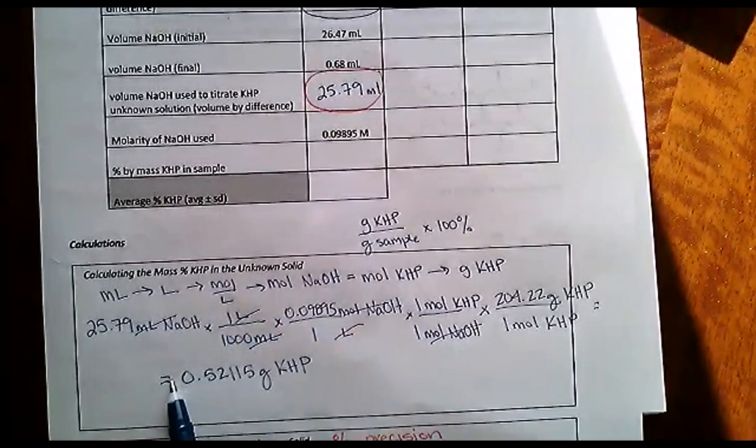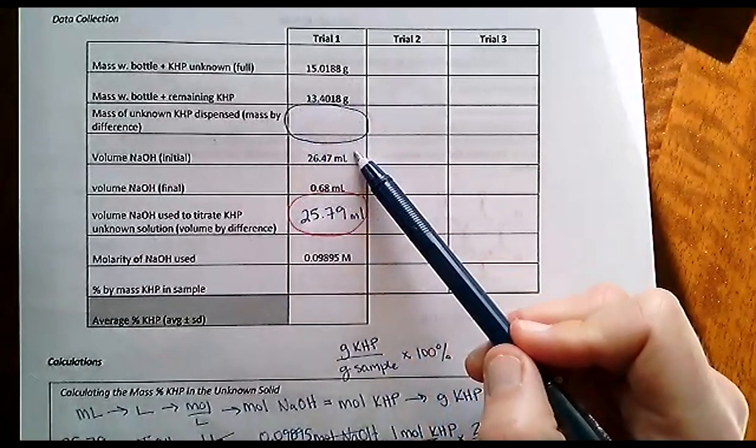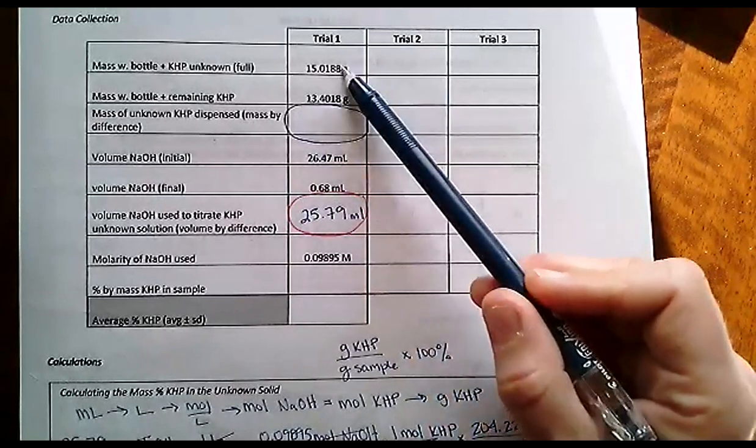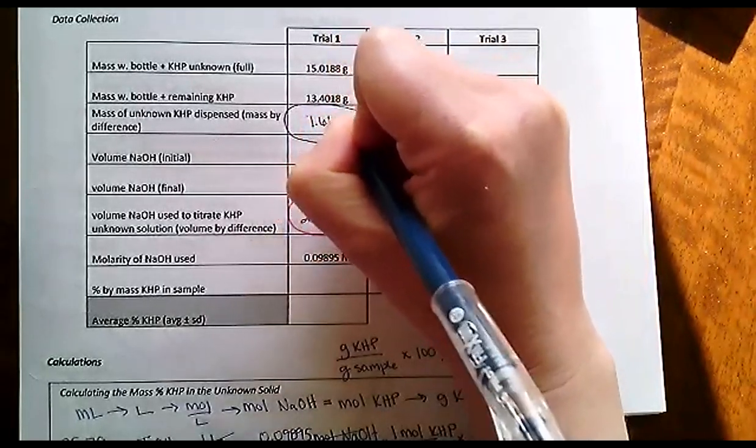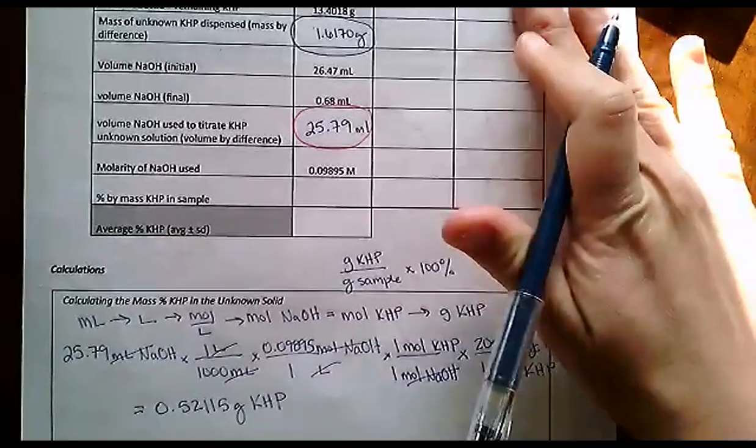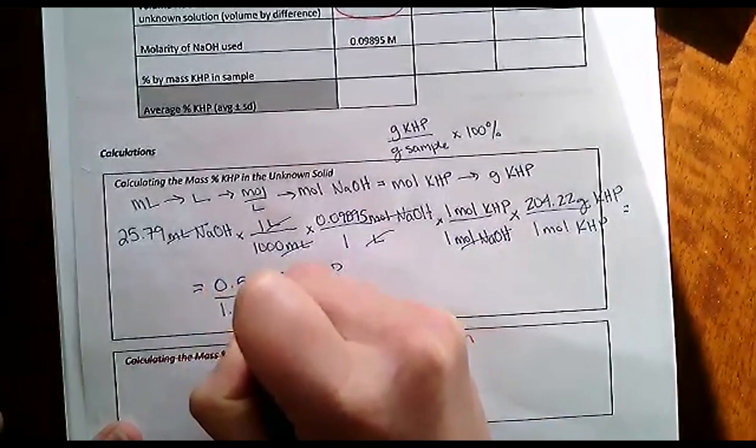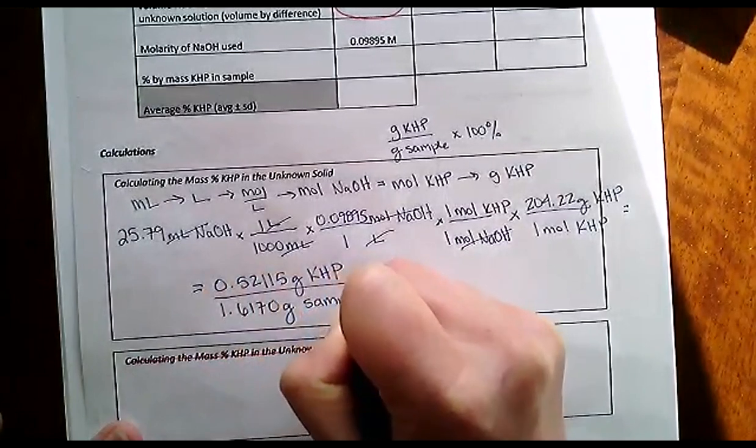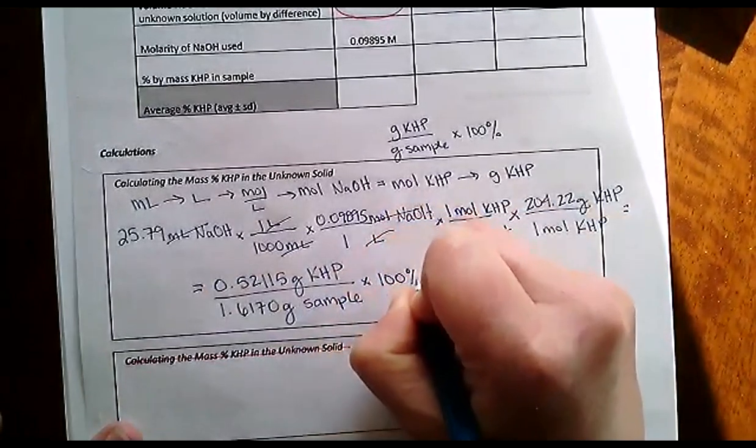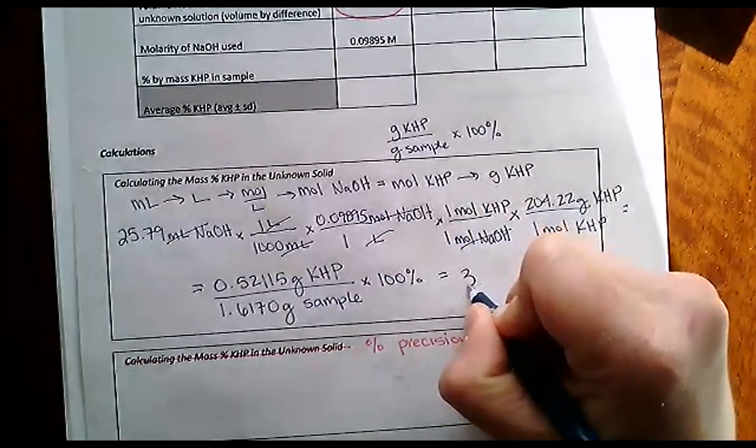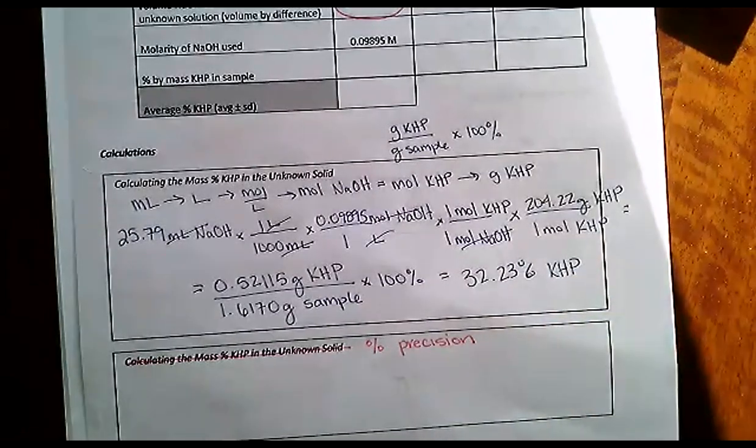My last question is, what percent of the total mass is that? The total mass of the sample by subtracting these two is 1.6170 grams of sample. We're going to divide now - take 0.52115 grams of KHP divided by 1.6170 grams of sample. That gives me the fraction of mass that comes from KHP. If I multiply that by 100%, then I get it as a percentage. This should tell me 32.23% of that sample by mass was KHP. I'd record that here.